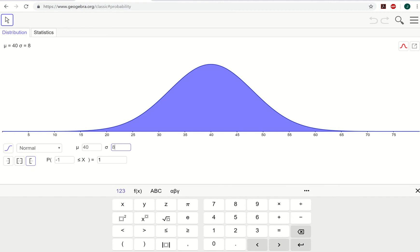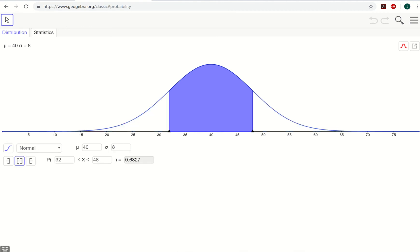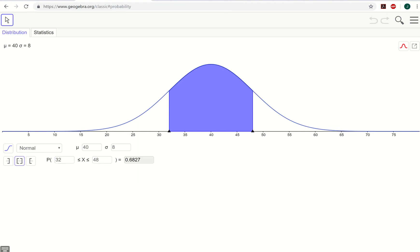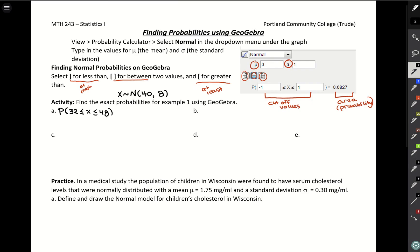We want to look between 32 and 48, which this program automatically goes from one standard deviation below to one standard deviation above. But we could edit those values if we needed to change them to something else. Our probability is 0.6827, which is very close to that approximation of 68% that we got before.